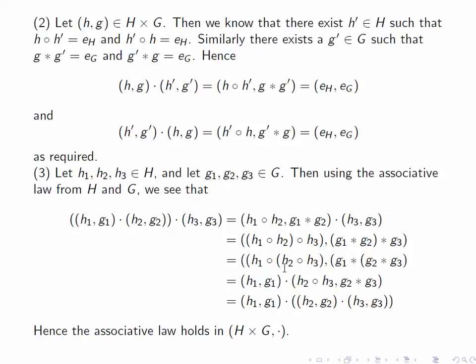By associativity in H, this becomes h₁ circle (h₂ circle h₃), and similarly we get g₁ star (g₂ star g₃). By the definition of the operation in H cross G, this is (h₁,g₁) dot (h₂ circle h₃, g₂ star g₃). And by the definition again of the operation, this last term is equal to (h₂,g₂) dot (h₃,g₃).